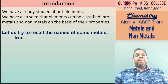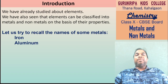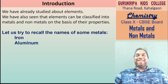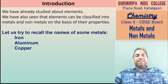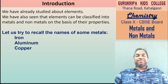Iron के बाद सबसे common metal क्या है? Aluminium. Aluminium utensils भी बनती हैं. Aluminium के cables भी बनते हैं for electricity. और क्या? Copper. Generally घर में जो electric wiring में wires use होते हैं उसमें copper wire होते हैं. और क्या? Gold.